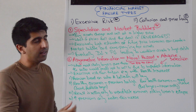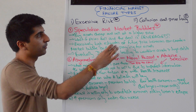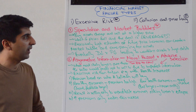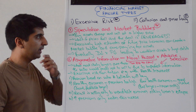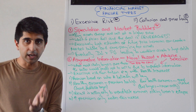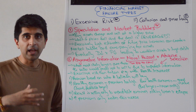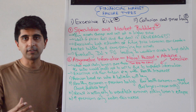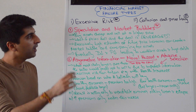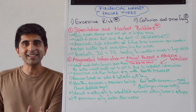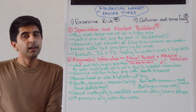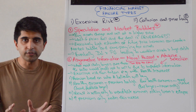Let's start by looking at speculation and market bubbles. This falls into the excessive risk section of financial market failure. Speculation occurs when assets are bought at a low price and then sold on at a higher price, making the profit difference between. The problem is though, what if the assets that you're buying end up falling in value? Big trouble, because you're sitting on losses.